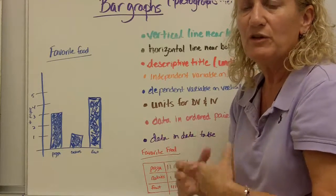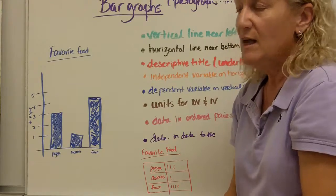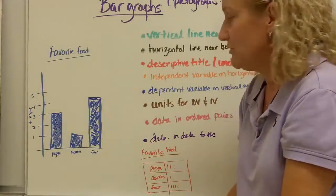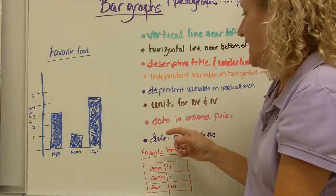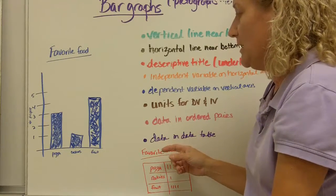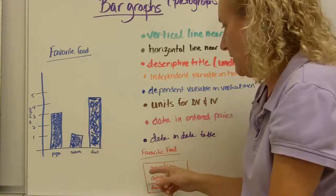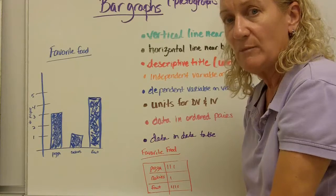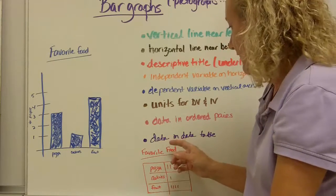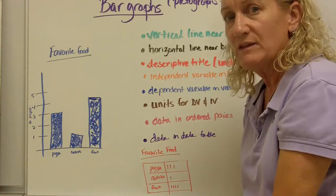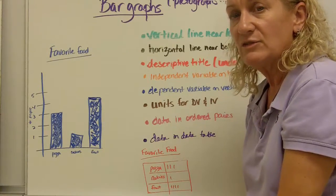Our units for independent variable and dependent variable. Well, if I say number of people, we don't have any units associated with that. But if we did have units associated with that, it would be in parentheses after the description. Data has to be in ordered pair format. If you're doing things like pizza and three people, that's considered an ordered pair. You don't always have to have two numbers to have an ordered pair. And finally, the data has to be in a data table somewhere. It doesn't necessarily have to be on the same page, but you need to have access to it and so do I.